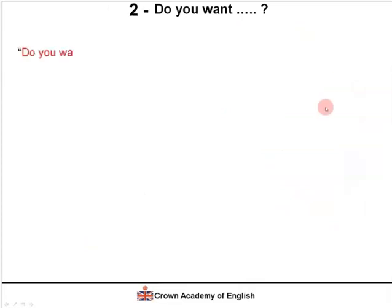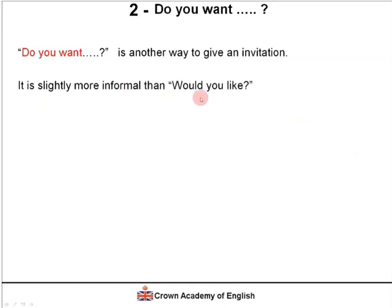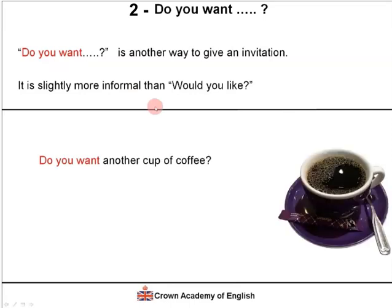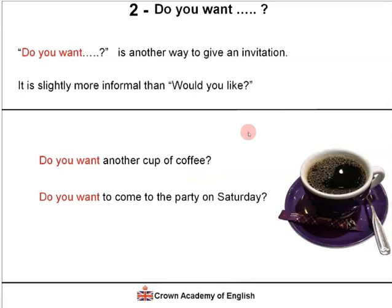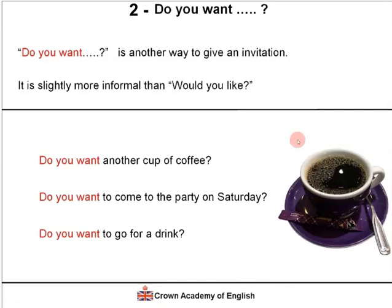We also have 'do you want,' which is another way to give an invitation. It is slightly more informal than 'would you like.' For example: do you want another cup of coffee? Here we have a noun phrase — we are offering another cup of coffee. Do you want to come to the party on Saturday? Here we have the infinitive. Do you want to go for a drink? You often hear this on a Friday evening after work.